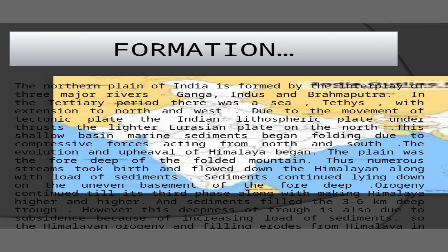Peneplains are those undulating surfaces of low relief, interspersed with occasional residual hills known as monadnocks, and claimed to have been formed by the widening of flood plains and the wearing down of interfluves by sub-aerial denudation. It is regarded as the end product of the normal cycle of erosion, although there are few large peneplains at this level today. Examples of peneplains, particularly in the Scottish Highlands, Appalachians, and Rocky Mountains, can be seen, and one of the most perfect uplifted peneplains is in east-central Africa.